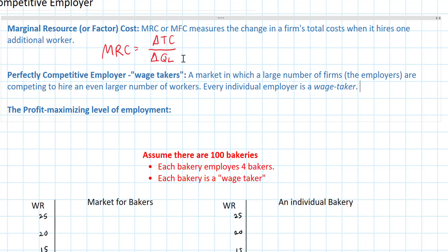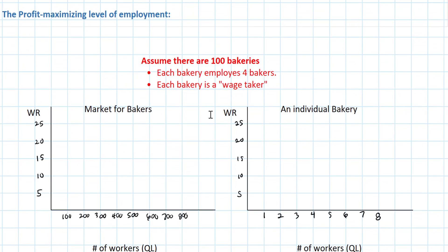This is basically the resource market version of what we call the perfectly competitive seller in product markets, in which each firm is so small that it has no impact on the market price for the good it is selling. In this case we're talking about hiring workers — each employer is so small that it has no impact over the price of the resource it is buying, which in the case of labor is the wage rate.